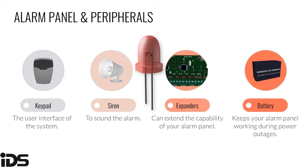LEDs are most commonly used to indicate events such as whether a partition is armed or disarmed. They use very little current, so most alarm system outputs can power an LED directly. If an output doesn't supply enough power, use a relay board to switch the LED. A popular application in South Africa with load-shedding is connecting LEDs around the house to an output programmed for AC failure — when power goes off, the LEDs automatically switch on via a relay and separate power supply.